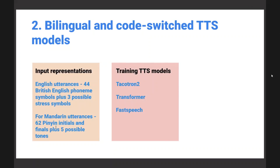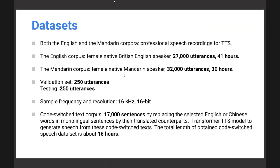For training the TTS models, they use existing TTS engines like Tacotron 2, Transformer-based models, or FastSpeech. The corpora used are monolingual corpora for both English and Mandarin - professional speech recordings. The English corpus is from a female native British English speaker with 27,000 utterances and 41 hours of speech. The Mandarin corpus is from a female native Mandarin speaker with 32,000 utterances and 30 hours of speech.